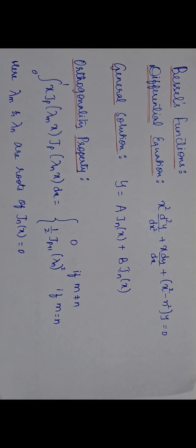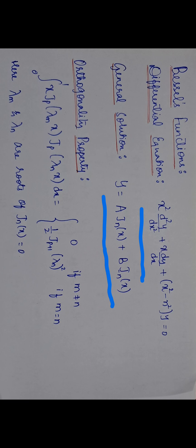Next comes Bessel's function. The Bessel differential equation is: x² d²y/dx² + x dy/dx + (x² − n²)y = 0. The general solution is: y = a J_n(x) + b J_{−n}(x). The orthogonality property: integration from 0 to 1 of x J_p(λ_m x) J_p(λ_n x) dx = 0 if m ≠ n, and equals (1/2)[J_{p+1}(λ_n)]² if m = n, where λ_m and λ_n are roots of J_n(x).